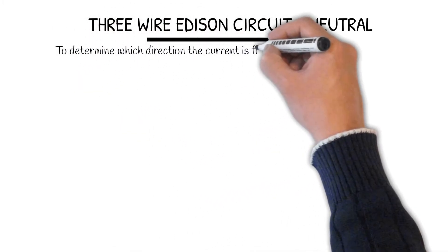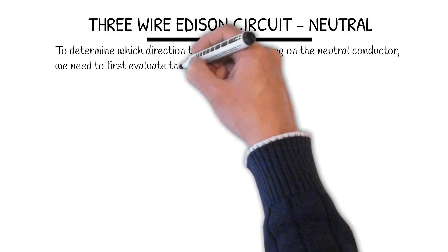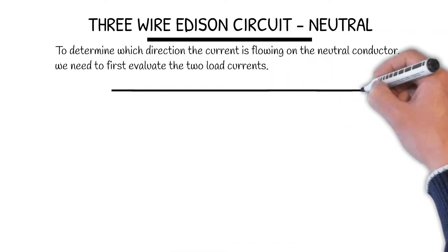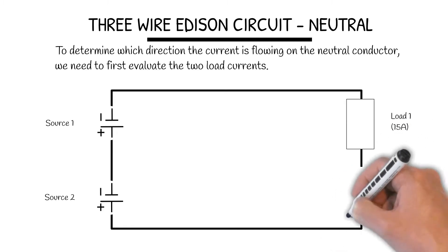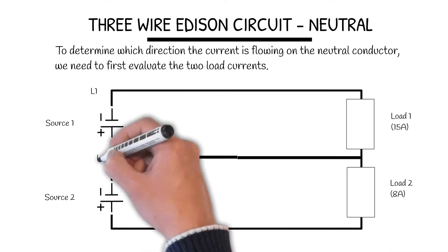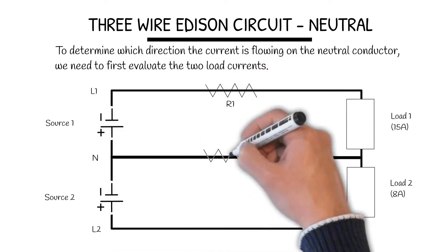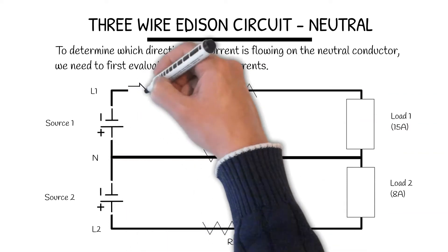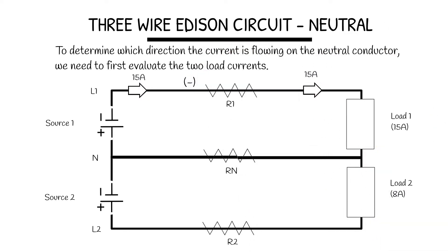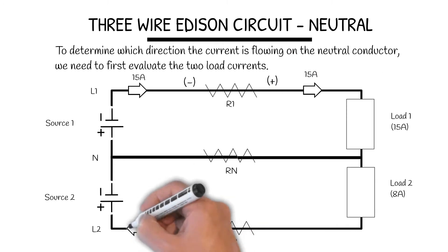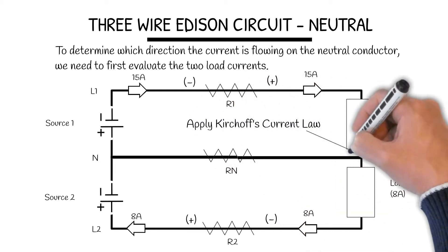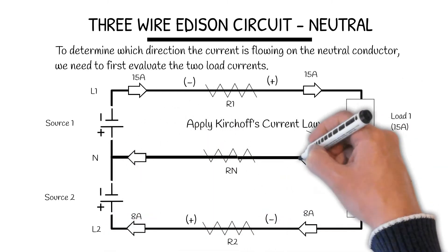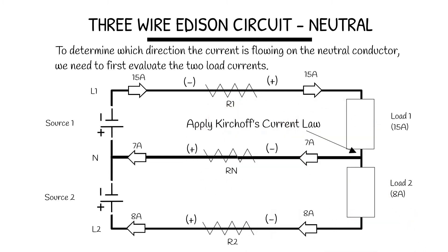To determine which direction the current is flowing on the neutral conductor, we need to first evaluate the two load currents. Let's say load one is 15 amps and load two is 8 amps. Based on electron flow, 15 amps leave the negative side, creating a negative and positive on R1. Coming back to the source, we have 8 amps, creating a negative and positive on R2. Applying Kirchhoff's Current Law to this junction, we must have another 7 amps flowing back to the source, which creates a negative and positive on the neutral resistor.